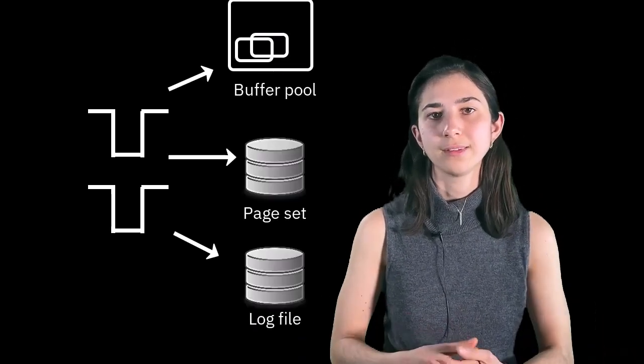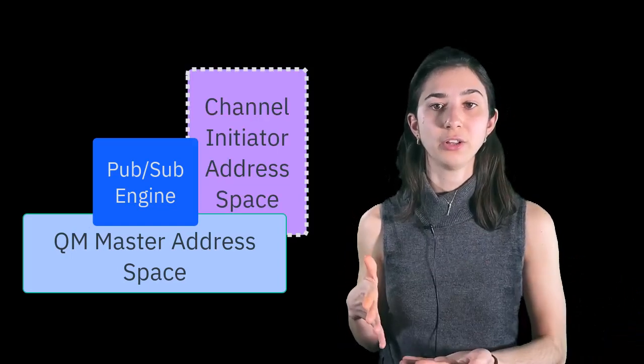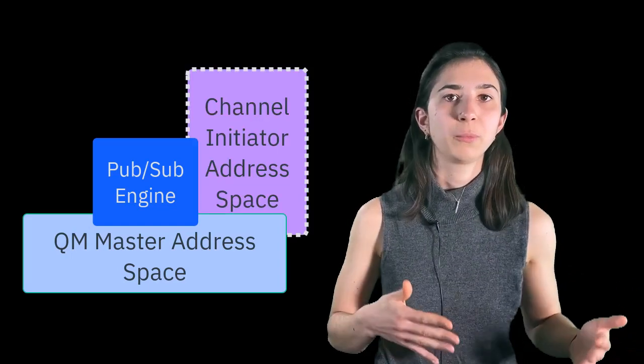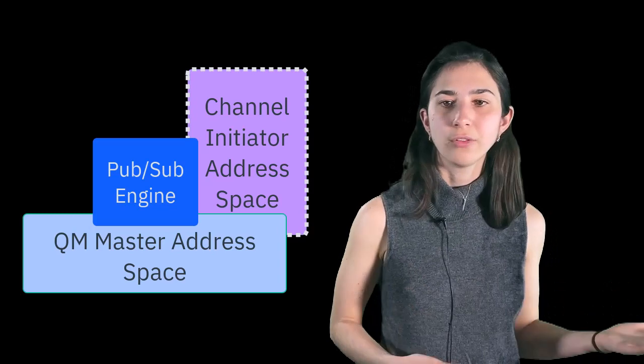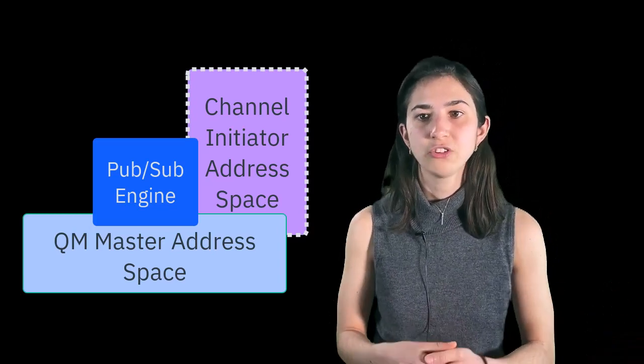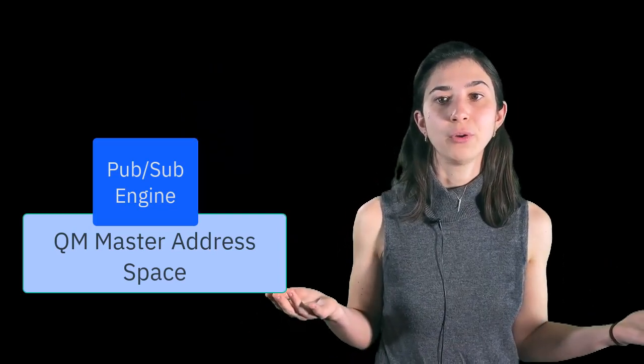The PubSub engine has components that run in the queue manager master address space and in the channel initiator, depending on where the subscribers are located. If all the subscribers are local to the queue manager, then the channel initiator components are not used.